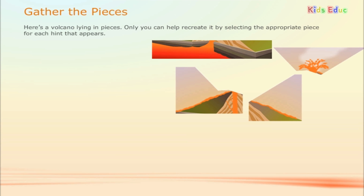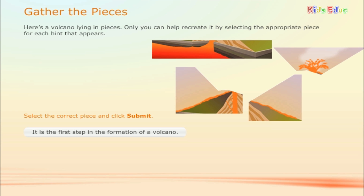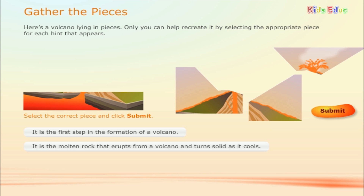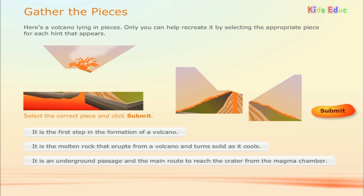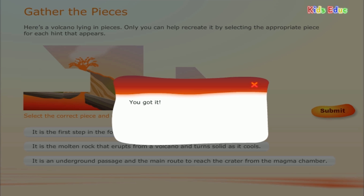Here's a volcano lying in pieces — only you can help recreate it by selecting the appropriate piece for each hint that appears. It is the first step in the formation of a volcano and turns solid as it cools. You got it! It is an underground passage and the main route to reach the crater from the magma chamber. You got it!